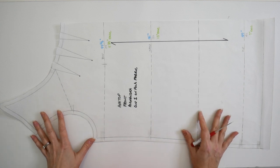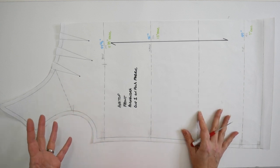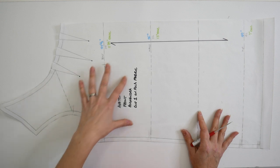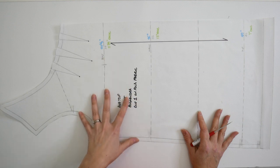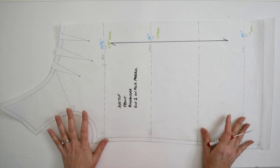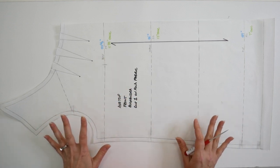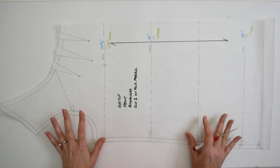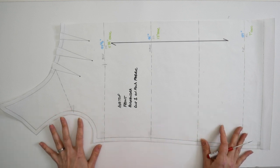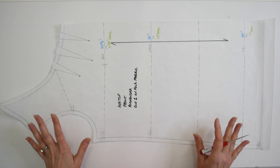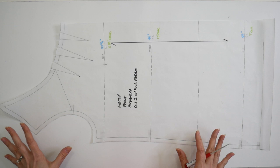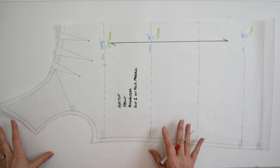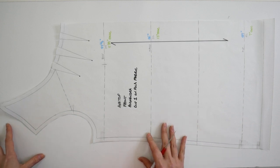As you begin to design with your block and you add different styling and manipulate your pattern in different ways, you're going to end up with different measurements for the finished measurements and the ease. Once you start to work with your block, you're going to start to understand what ease amounts work best for certain silhouettes. This is the reason I want you to always be aware of the measurements.